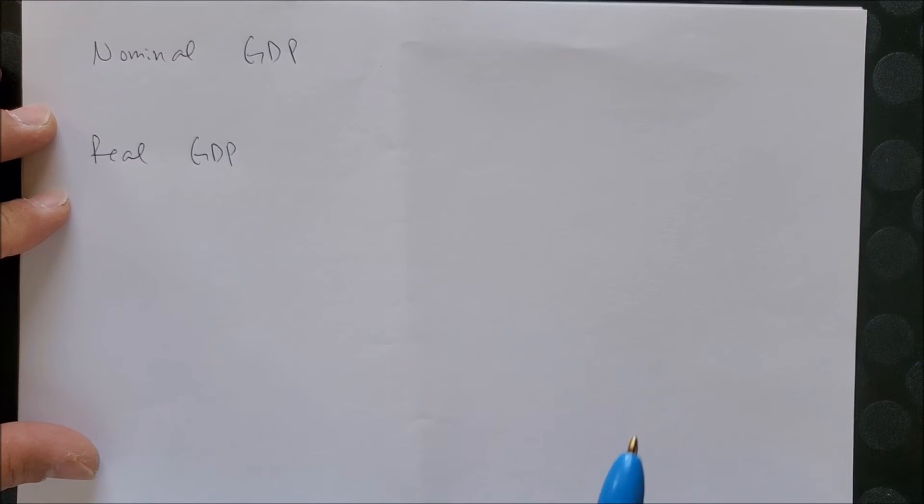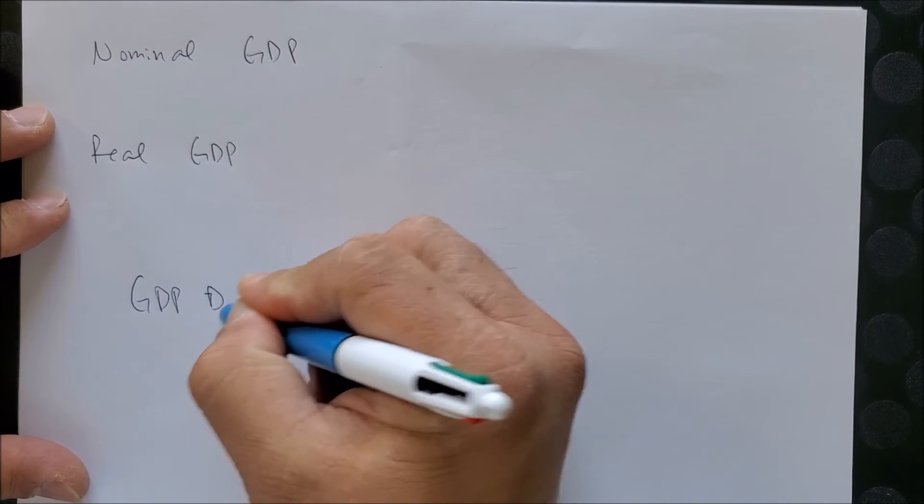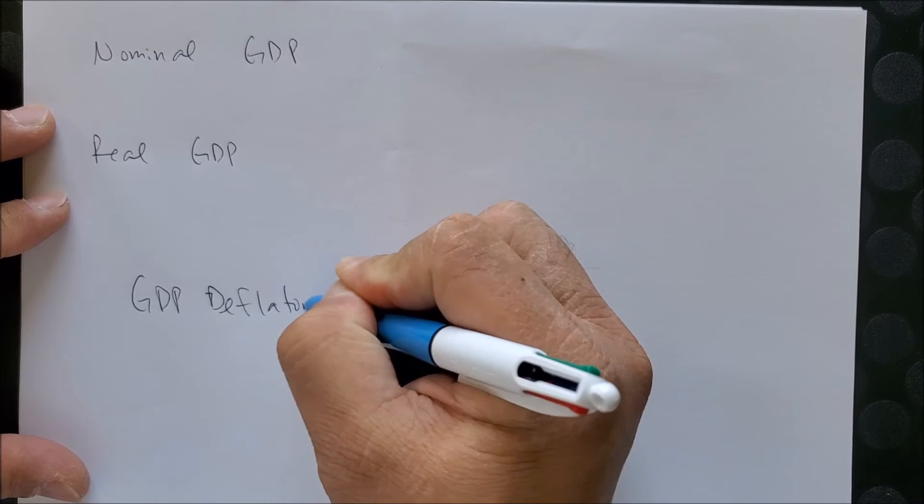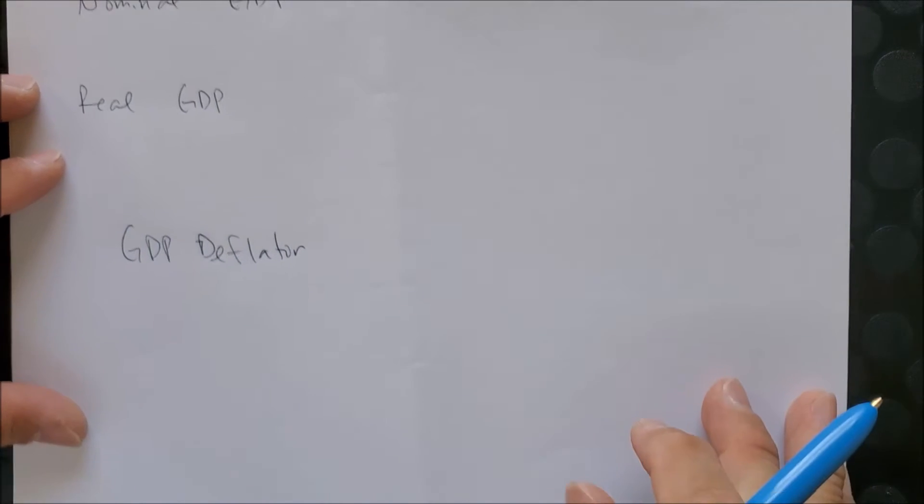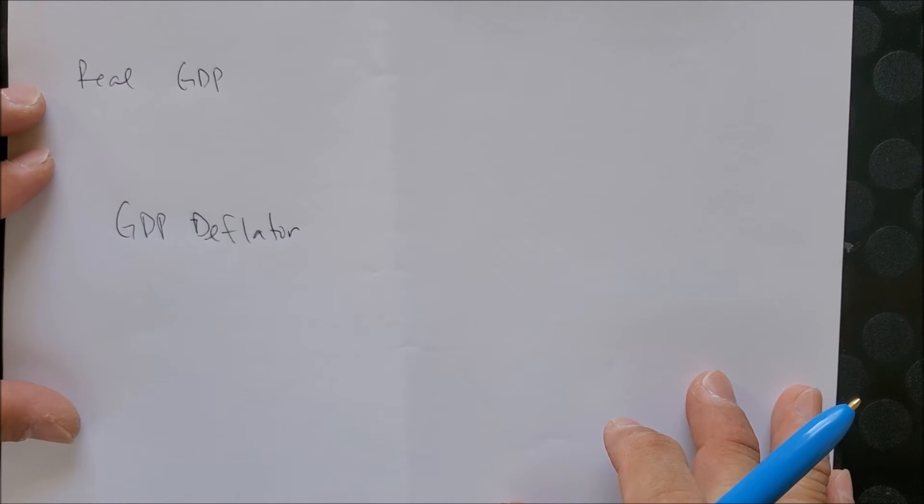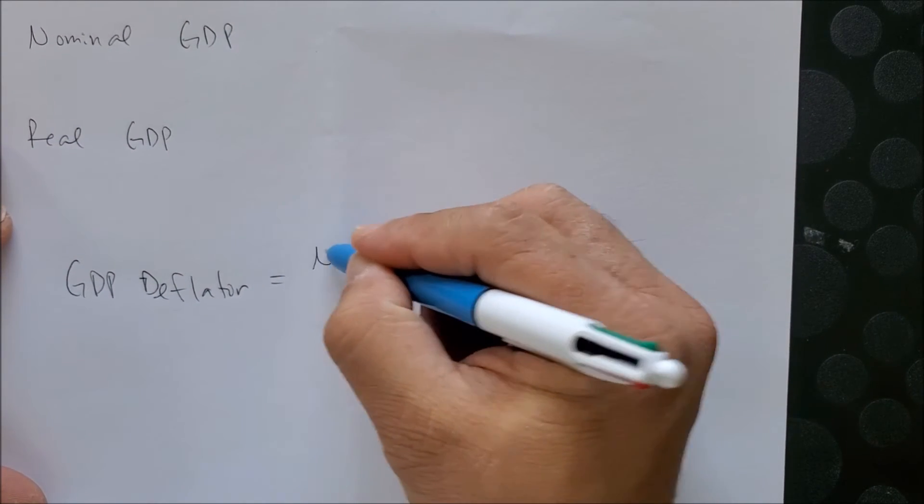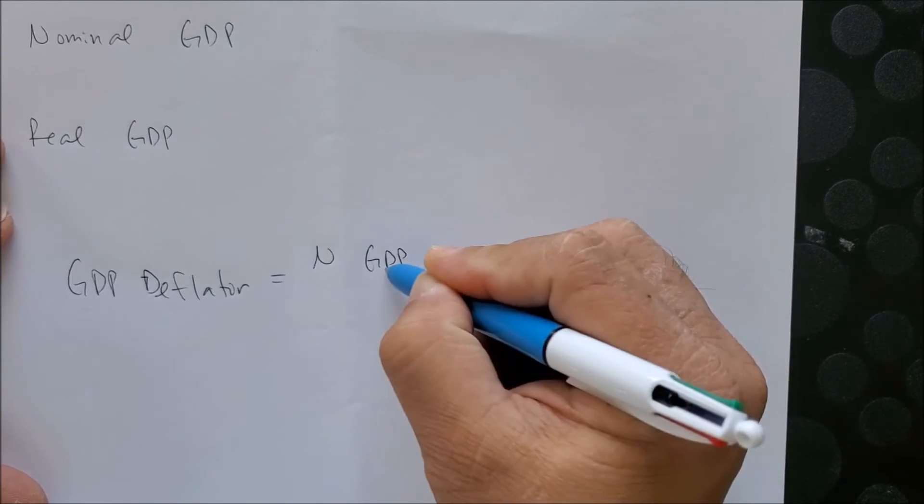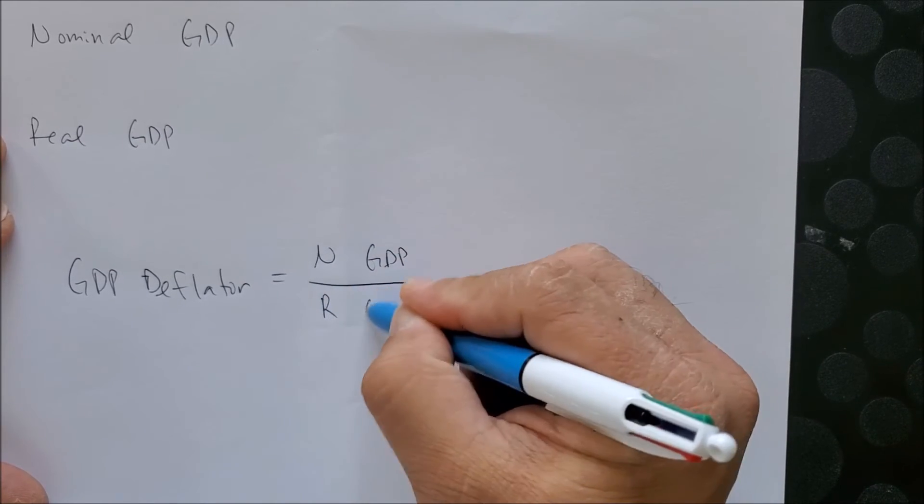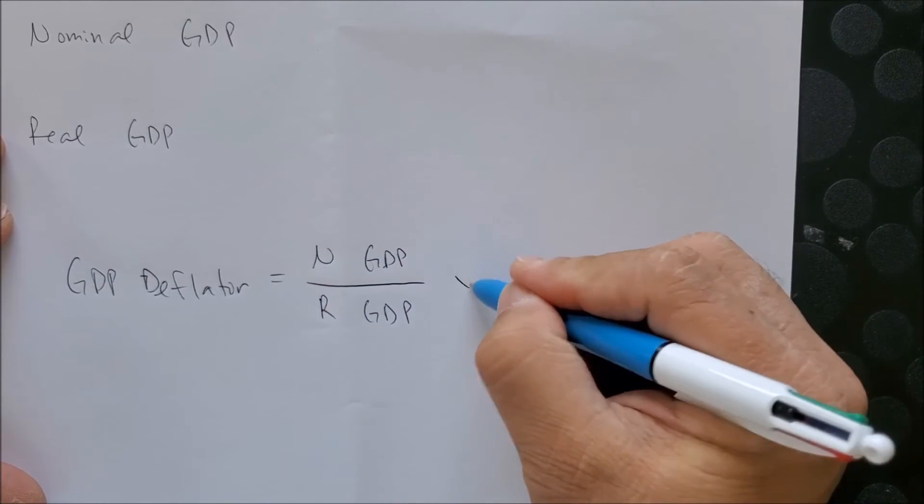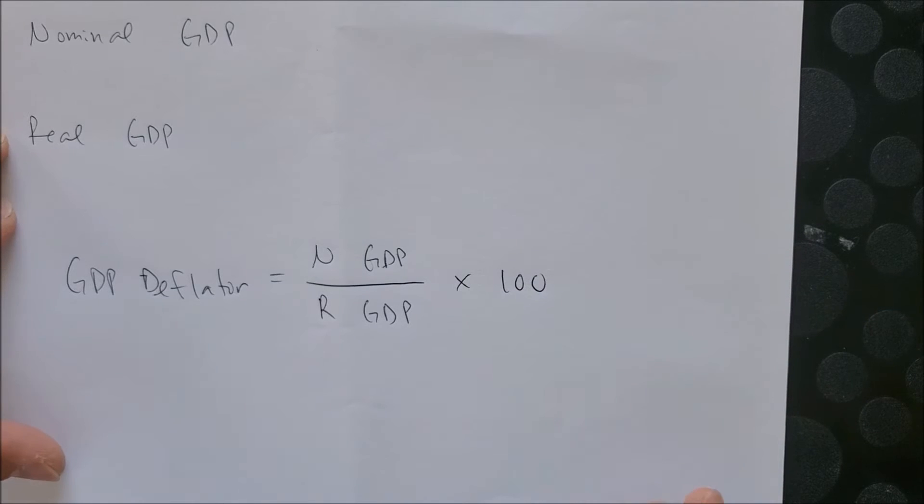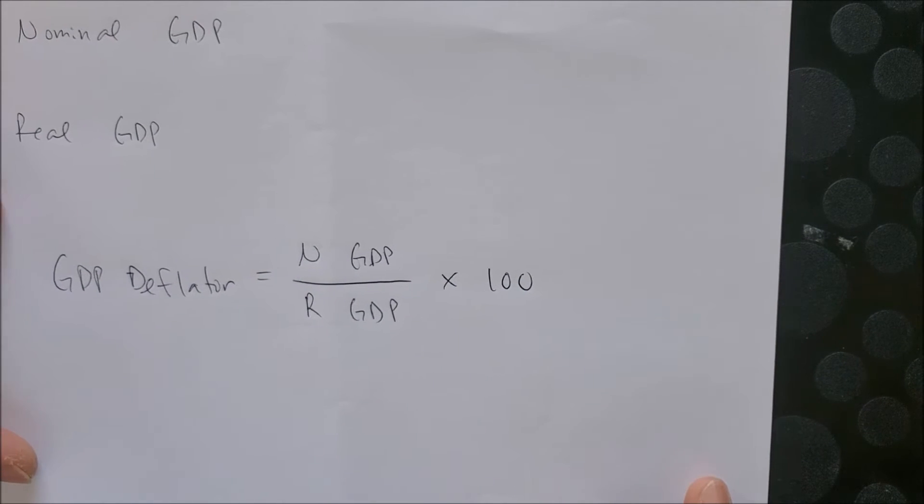The GDP deflator is one way to measure the growth of an economy in one given year. This is a function of nominal GDP over the real GDP times 100.